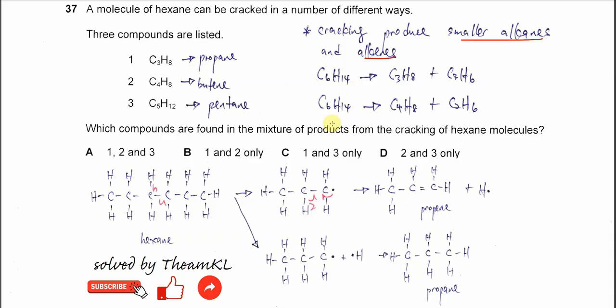Hexane also can be cracked into butene and ethane. So it's always an alkane and alkene.